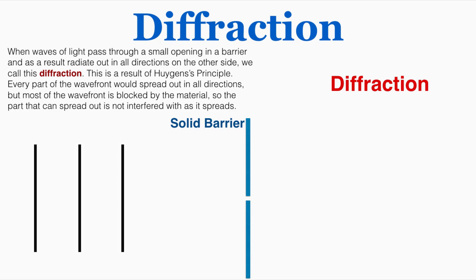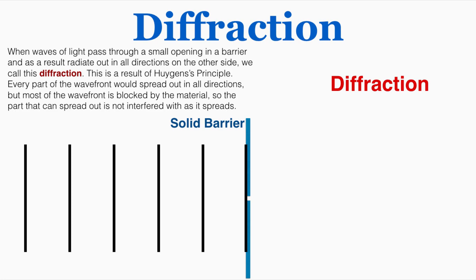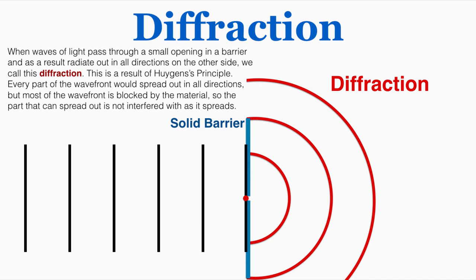We can imagine this wavefront approaching the solid barrier. When it hits the barrier, most of the wave is not able to move through — only the small point in the center can. Since every single point along that line behaves like a center of disturbance, on the other side of the barrier the wave is going to radiate out in all directions. So the wave changes from all moving together as one solid front to spreading out in all directions — this is what happens during diffraction.